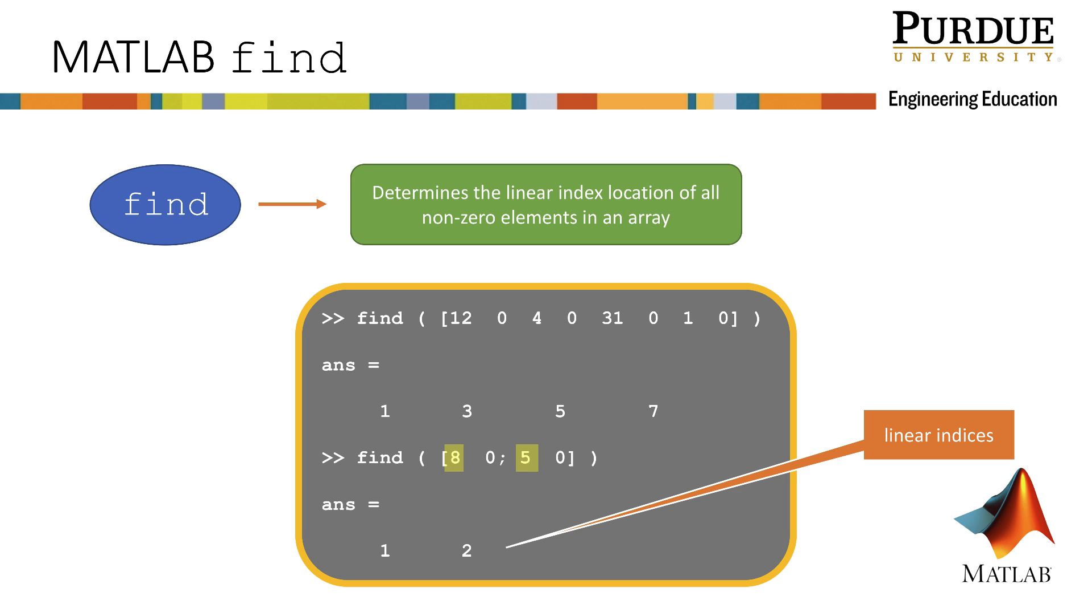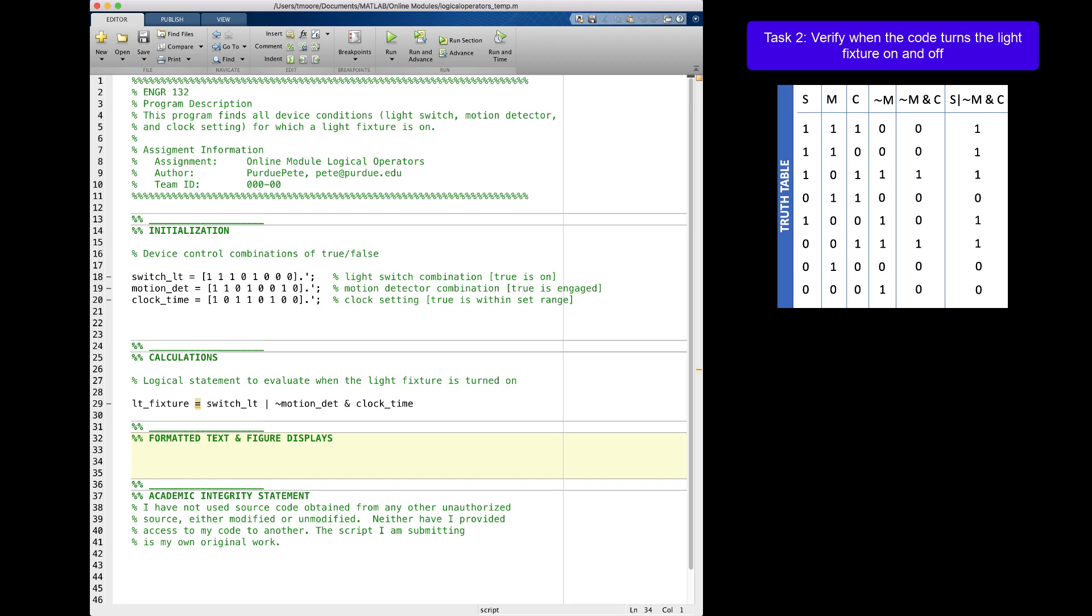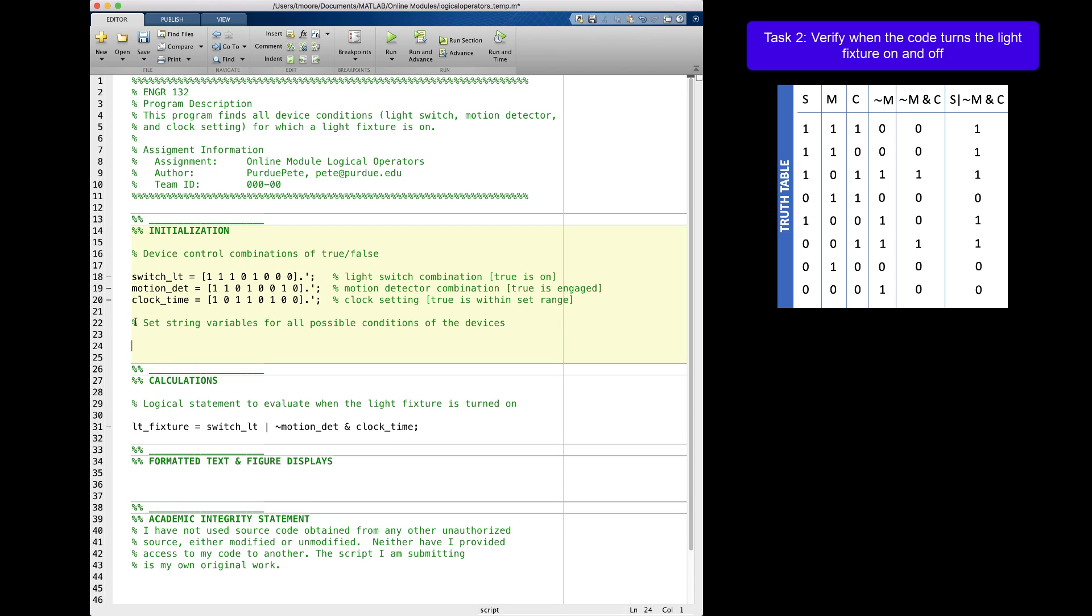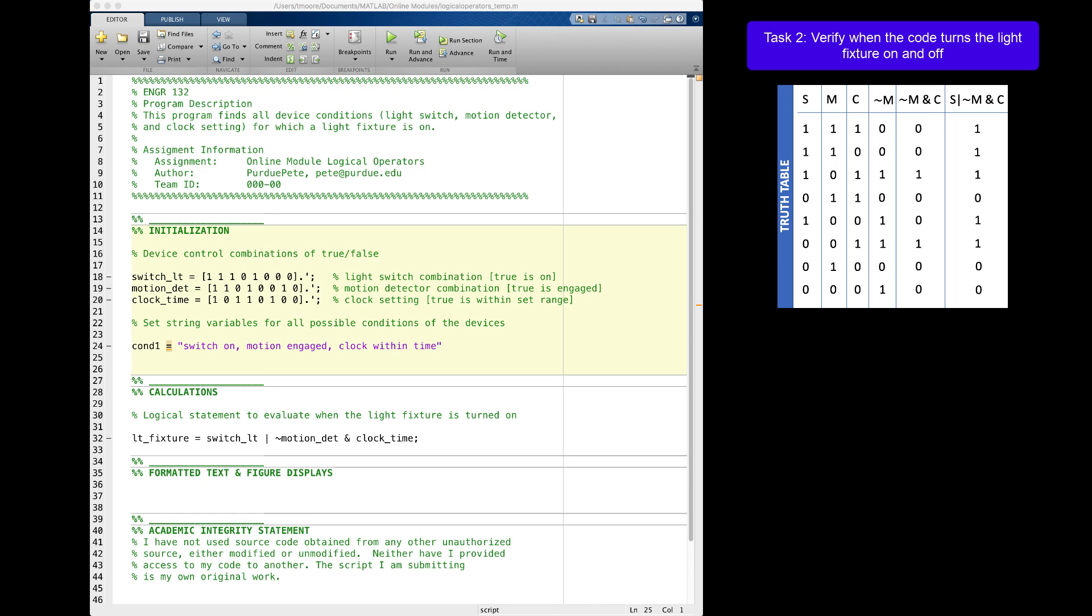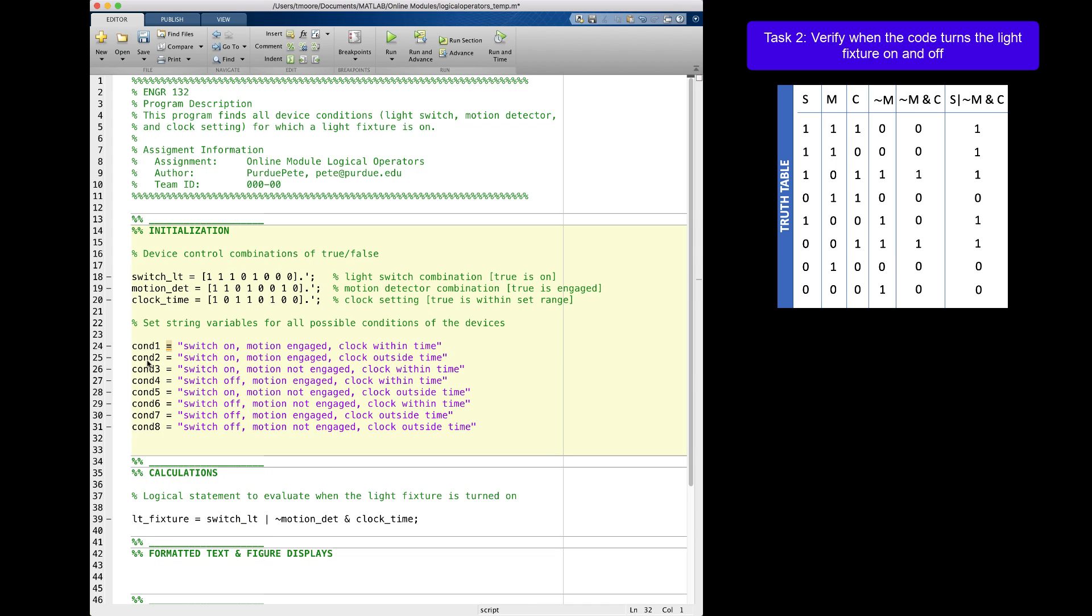Now let's return to our example to see how FIND is useful for this problem. We will use the FIND command to create a location array to determine the conditions under which the light fixture is turned on. Before I can do that, I am going to define all of the possible conditions for the devices using words instead of ones and zeros. I can do this with string variables. String variables are set using double quotes. The point of this code is to take the information from the truth table shown at the right, which is also the information in the three initialized variables in this code, and replace them with words that represent the condition. Look at the code I have added here, and compare it to the truth table at the right. You can see that each 1 and 0 corresponds to appropriate words in the code.